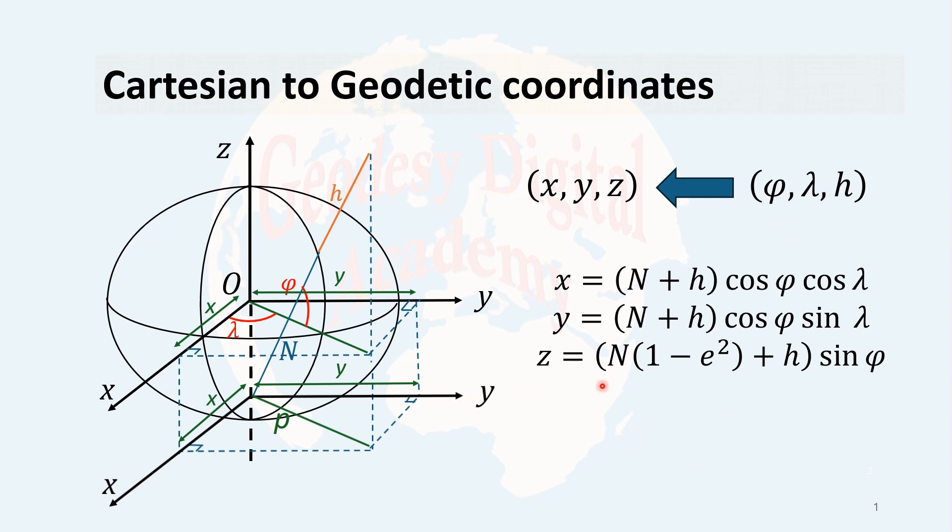we could show that these are the formula for conversion of the geodetic coordinate to Cartesian coordinate. Of course, for the z-coordinate, it was a little bit more complicated and we provided the proof and showed how to derive this formula for the z-coordinate.